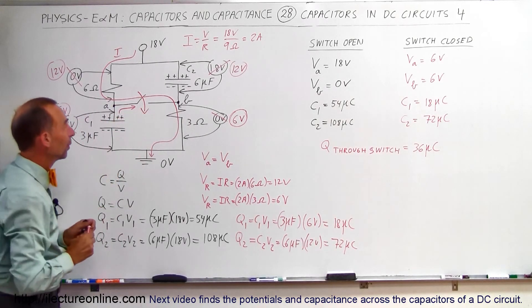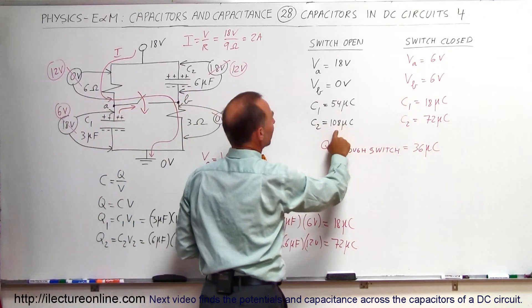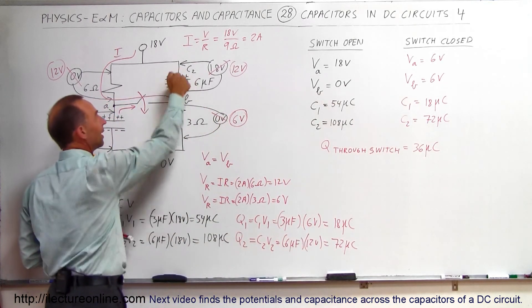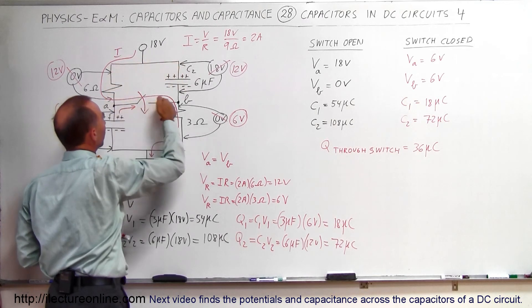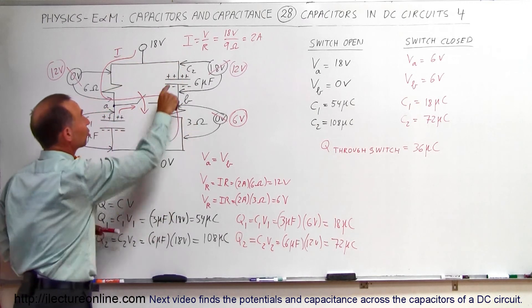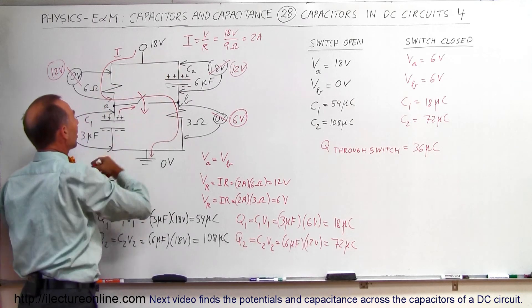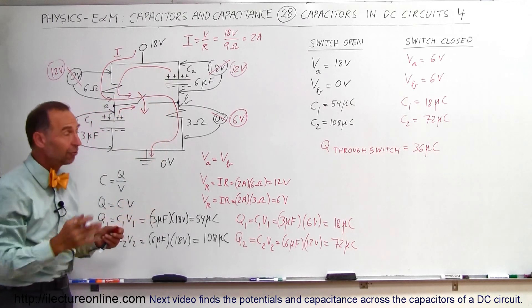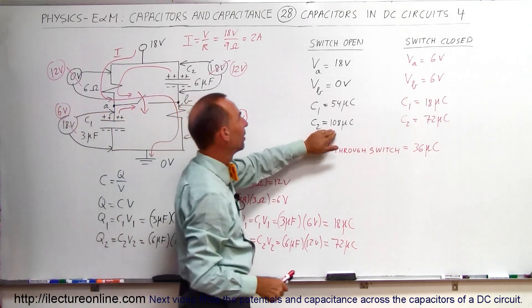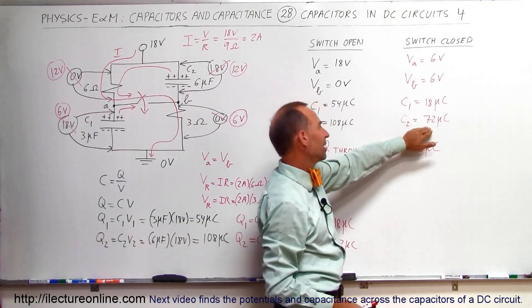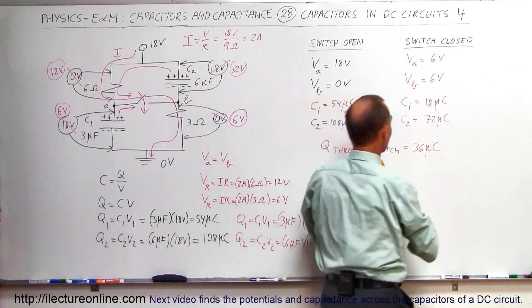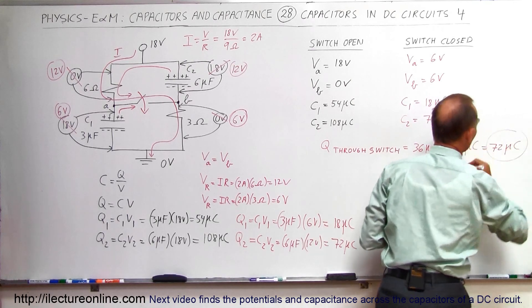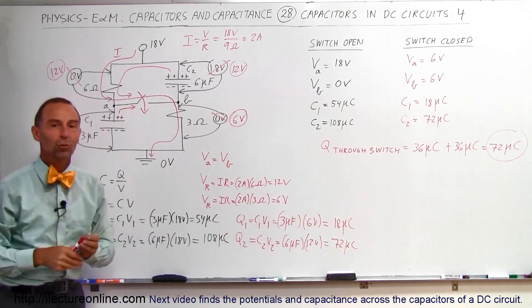For the second capacitor: we started at 108 microcoulombs and dropped to 72 microcoulombs. That excess positive charge cannot go through the capacitor, so it must travel around and through the switch — also from left to right. That's an additional 108 − 72 = 36 microcoulombs. The two contributions are additive, giving a total of 36 + 36 = 72 microcoulombs flowing through the switch from left to right after it is closed.